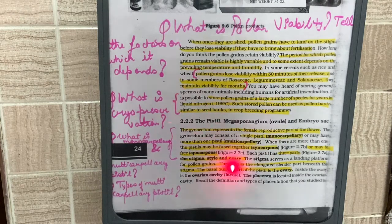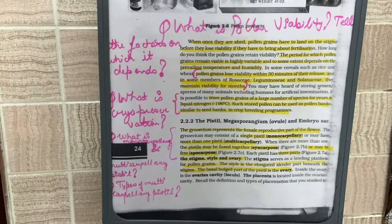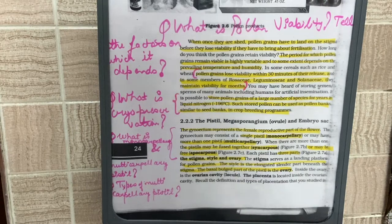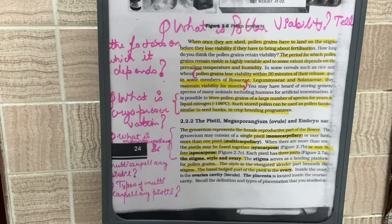The pistil or carpel consists of three parts: the stigma, which is the landing platform for the pollen grain; the style, which is a long elongated structure connecting the stigma with the ovary; and the ovary, which is the basal bulge.